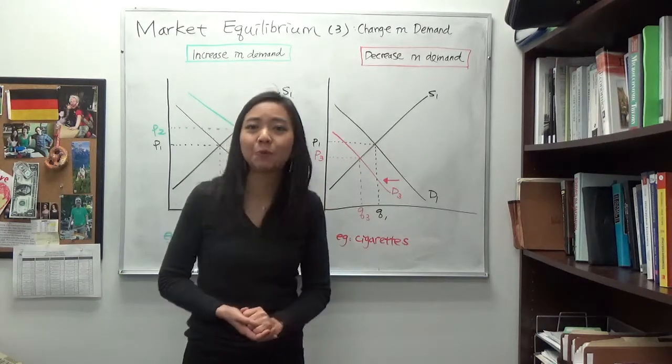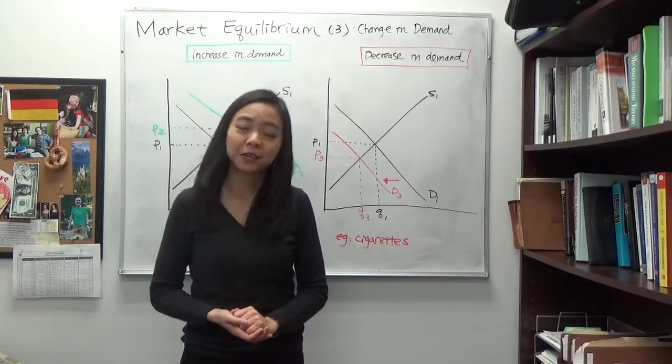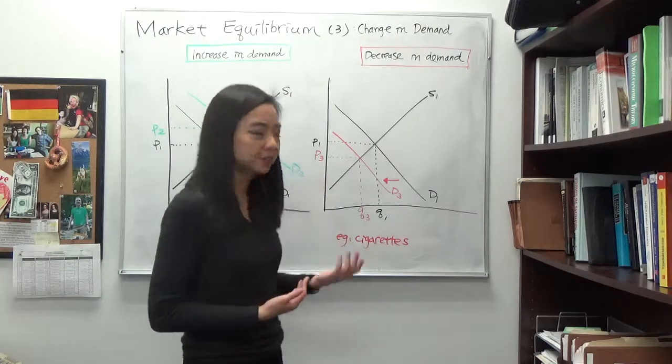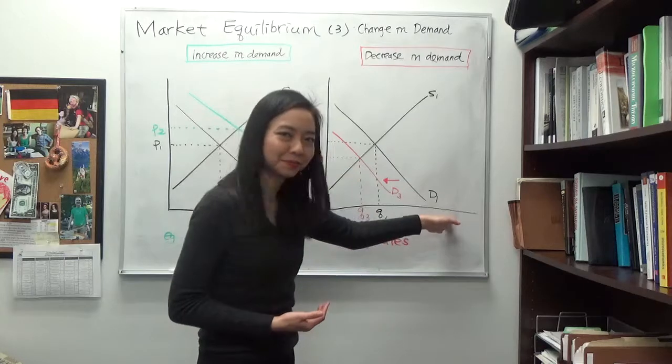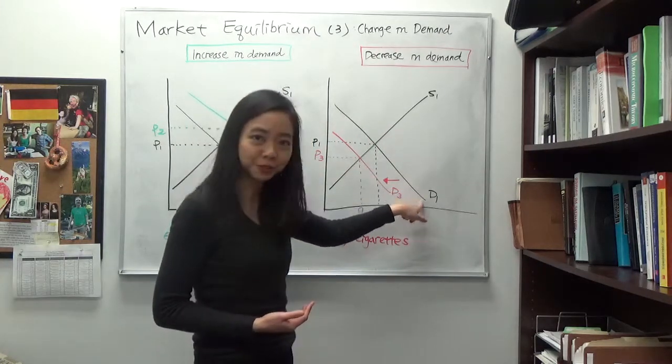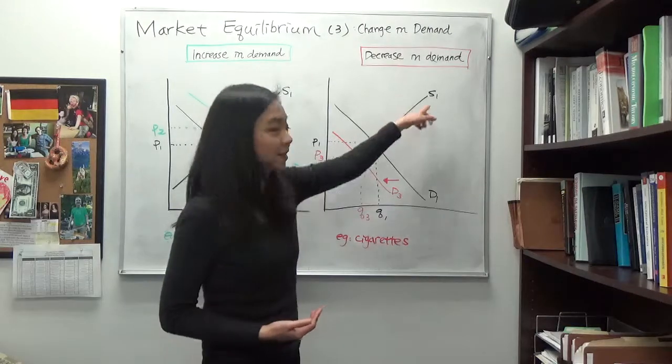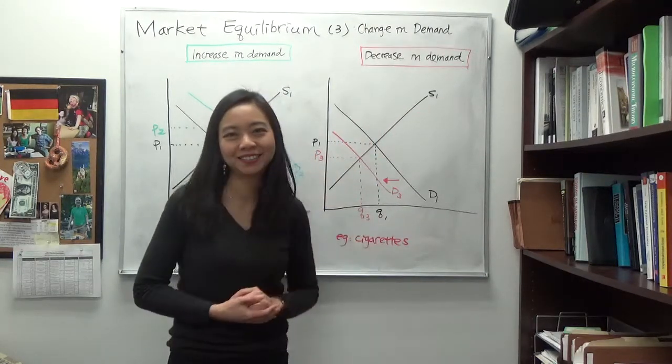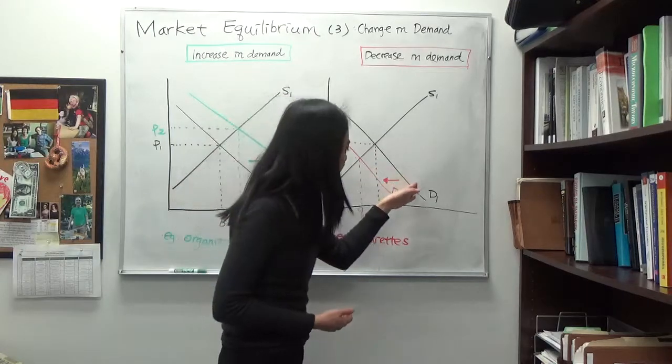And now you will be able to analyze an event when there is an increase or decrease in demand. What you have to do is this. First of all, you draw your diagram, mark your initial demand curve as D1, initial supply curve as S1. And their intersection, you find P1 and Q1.